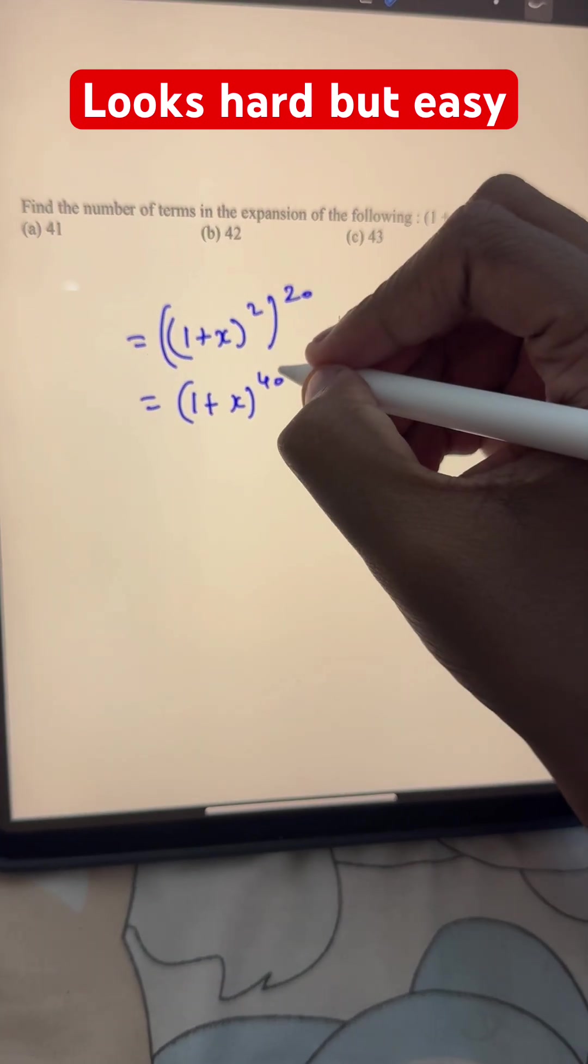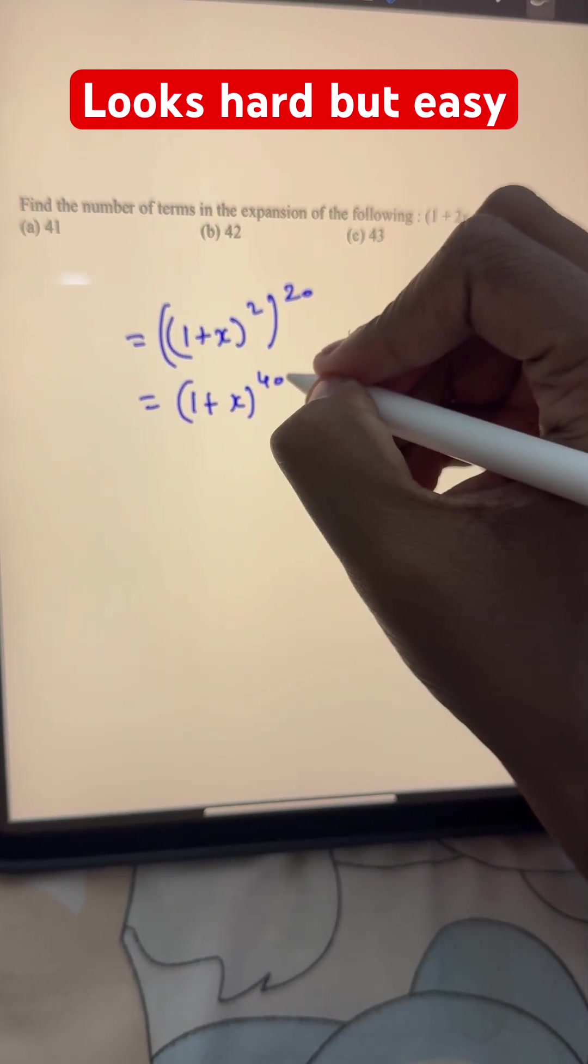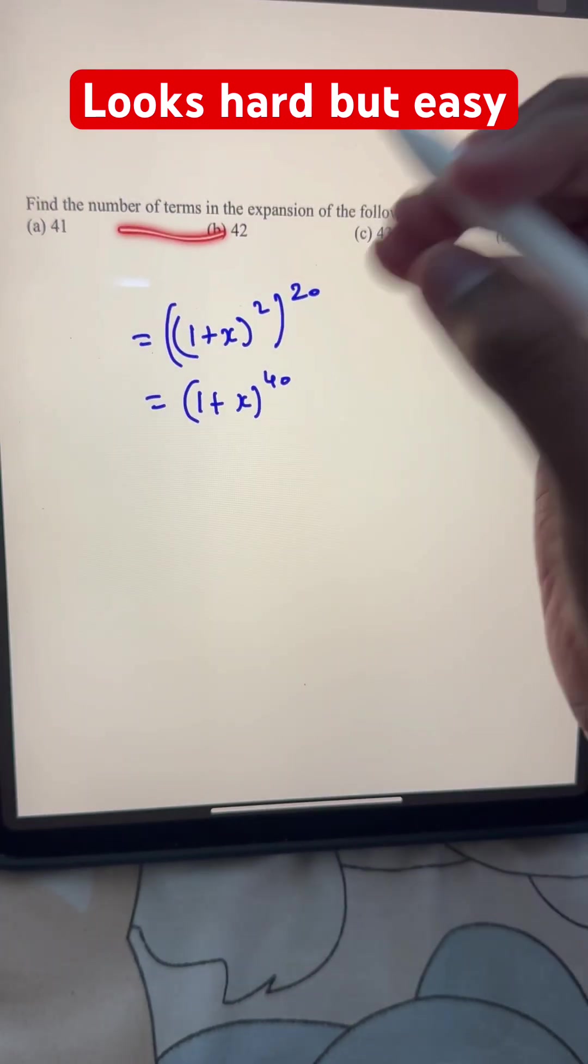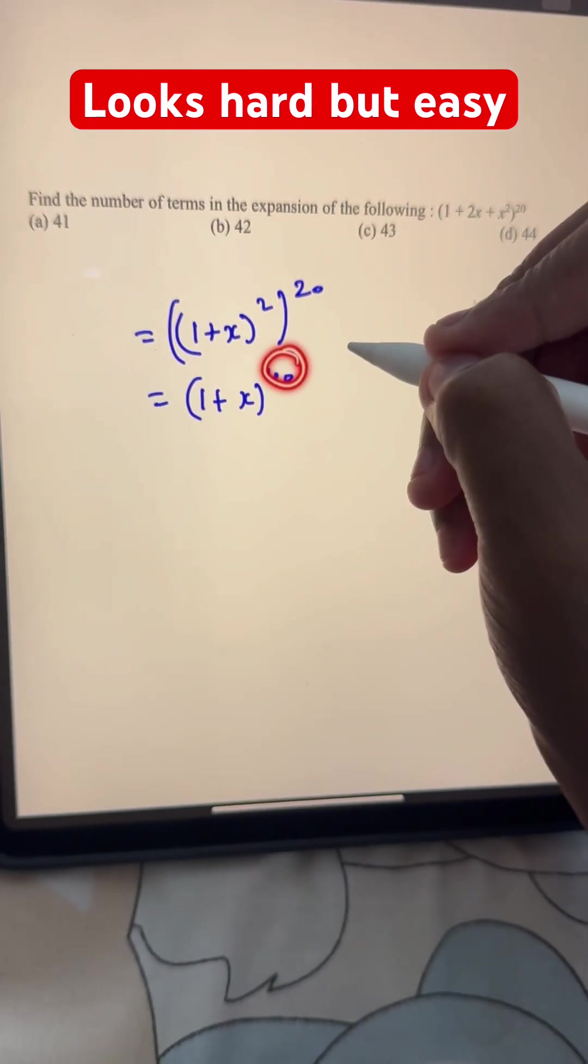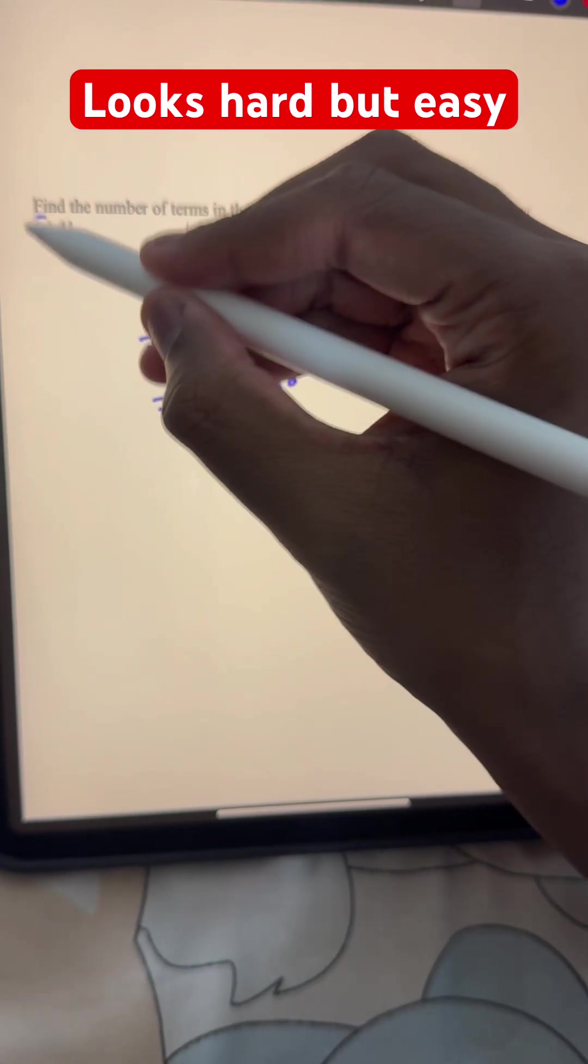Now, this is a binomial with n, or the exponent is equal to 40. So, the number of terms will simply be n plus 1. In this case, 40 plus 1, which is 41, option A.